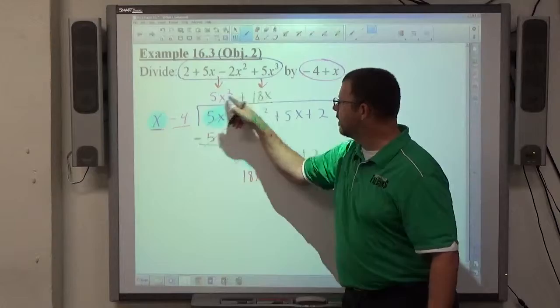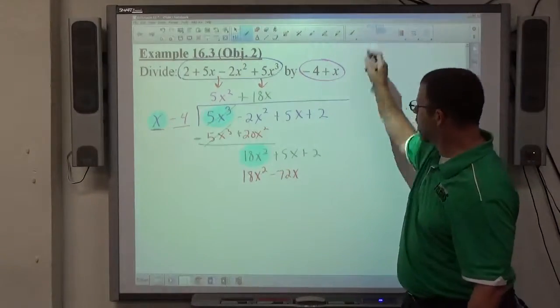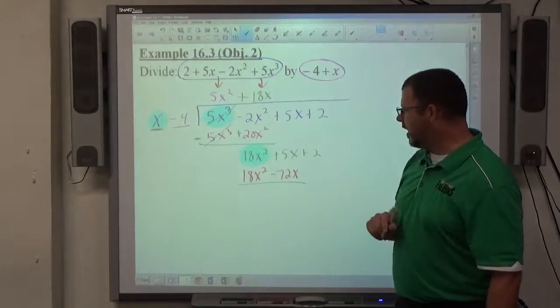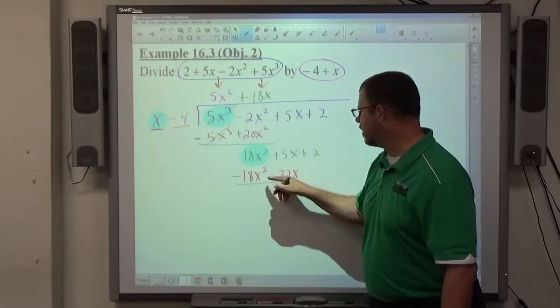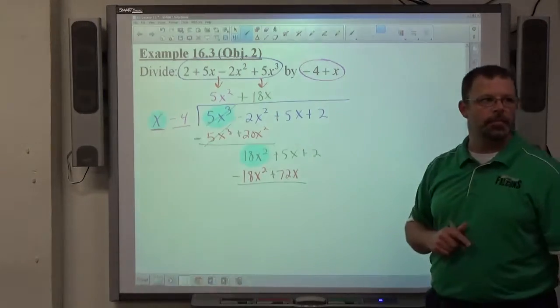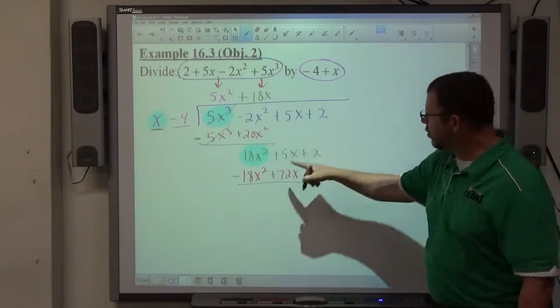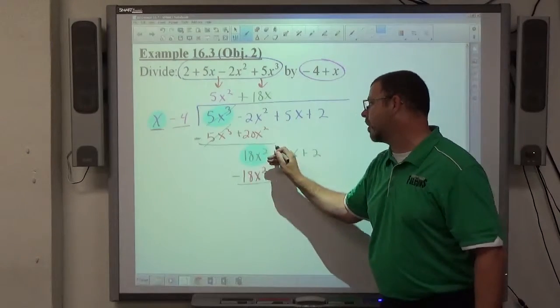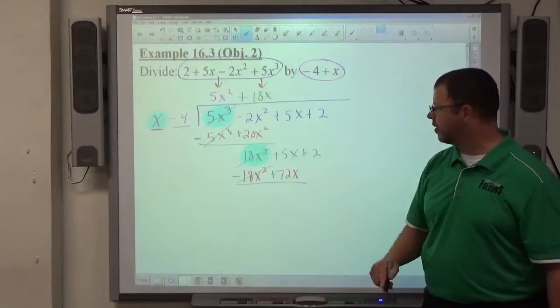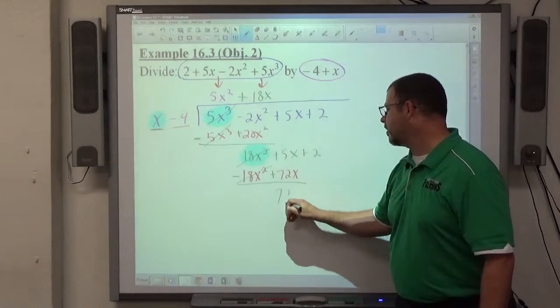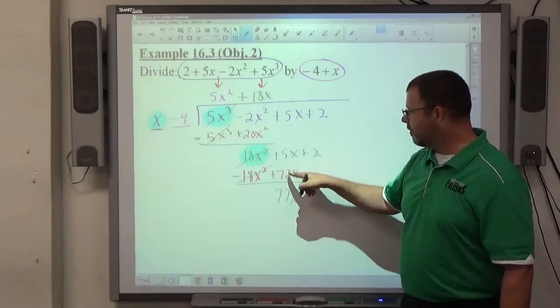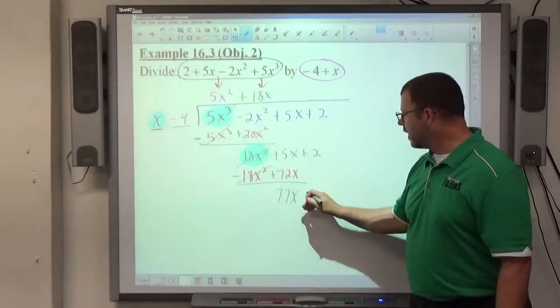So 18x times x, 18x times negative 4. Change every sign in that product. So 18x squared is positive, make it negative. 72x is negative, make it positive. Then combine like terms. 18x squared minus 18x squared. I'm crossing those off because they're exact opposites. Positive 5 and positive 72 are both positive. I'm going to add them together. 72 is bigger, so it's positive. Bring down the rest of the terms. This isn't a constant, so we repeat the process again.